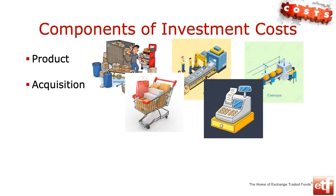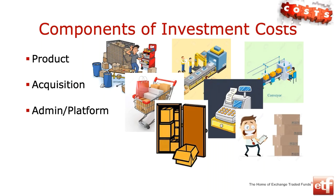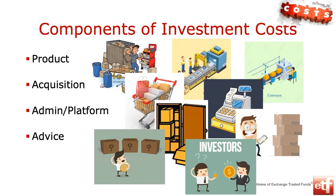Then we've got to go and buy those boxes that we created — go to the shopping center, put them in our trolley and pay for what it is that we're buying. A second layer of investment costs. When we bring them home, we need to store them somewhere — our admin fee or platform fee — and also have some sort of record of what we actually have. Maybe you need an advice fee to actually be told what to do or how to grow your money faster. And there are some other costs we'll look at right at the end.